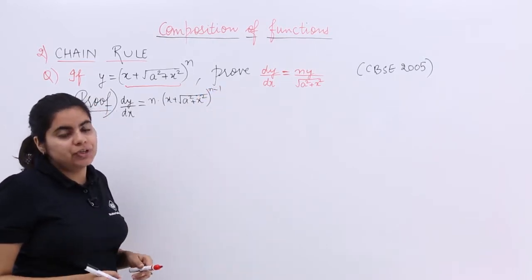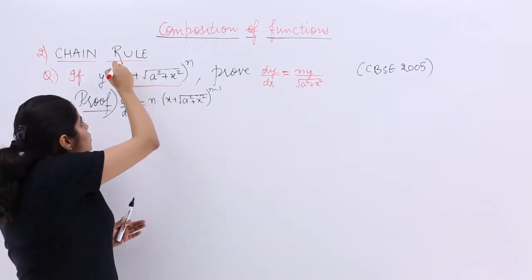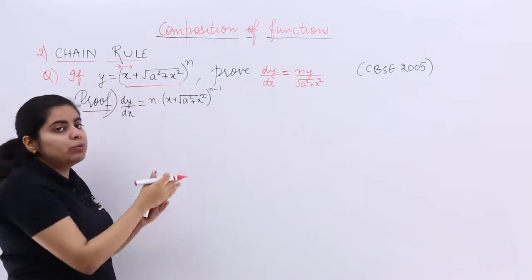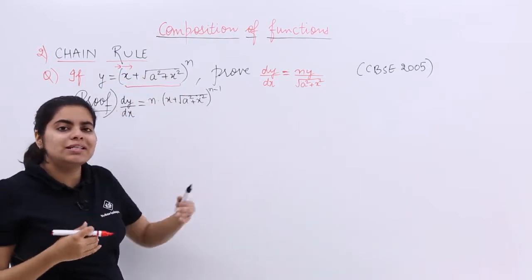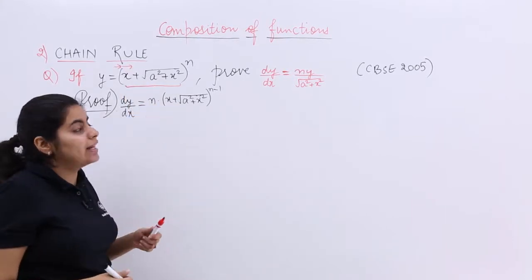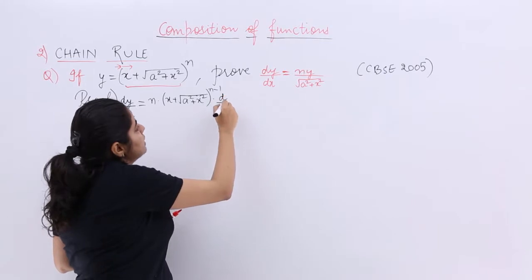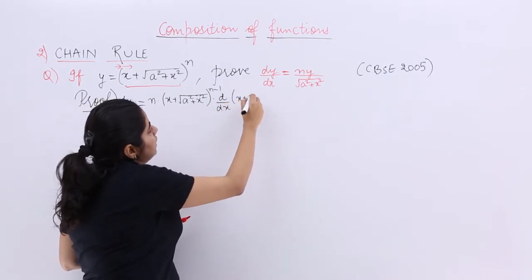But the question doesn't stop here. Since it is the chain rule, we saw earlier there was a bracket, so we encountered a bracket, then we went inwards and we found many more things. So we went for the differentiation again and the differentiation of the bracket this time, let's make it one step at a time, differentiation of this thing.